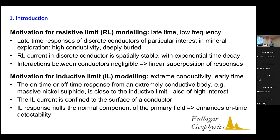In the resistive limit the current is spatially stable, so we can then invert on shape alone, which is convenient. In the resistive limit, interactions between conductors are pretty negligible, and we can therefore add responses from conductors — applying linear superposition of various individual conductors — without risking too much error.